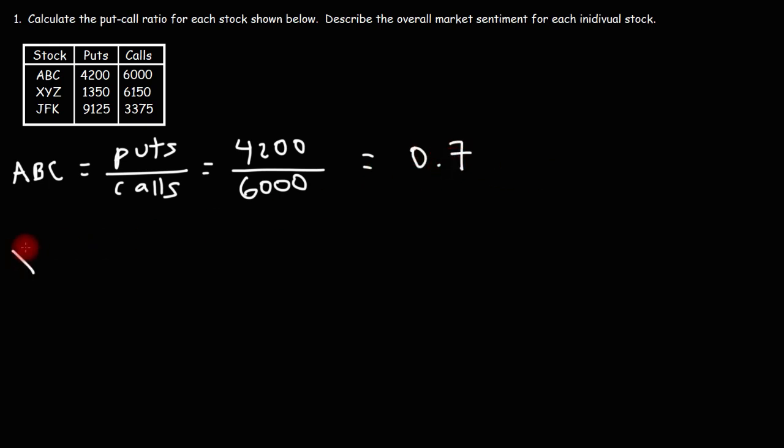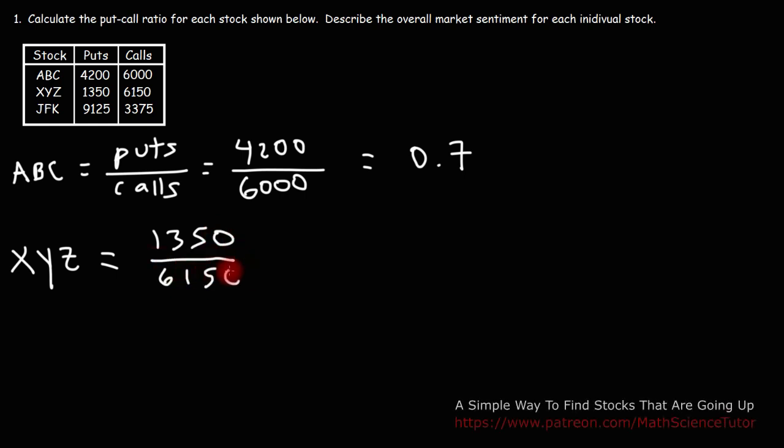Now let's do the same thing for the next stock, stock XYZ. So the put volume is 1,350 and the call volume is 6,150. So it's 0.22 for stock XYZ.